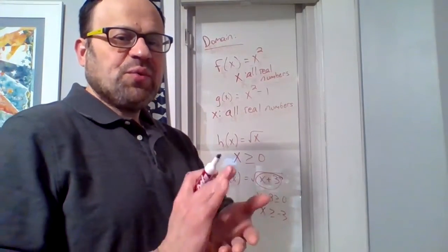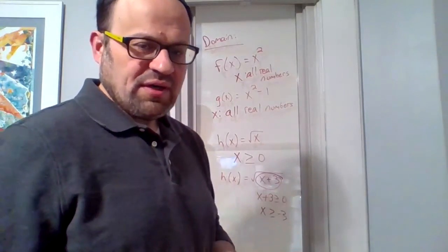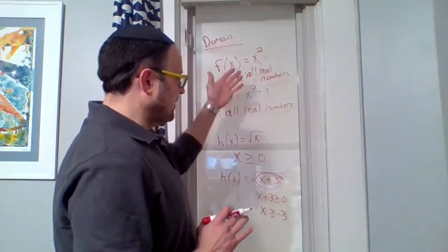So that means that x has to be greater than or equal to negative three. Okay, again, we're looking to use our logic, our idea of what x is allowed to equal.